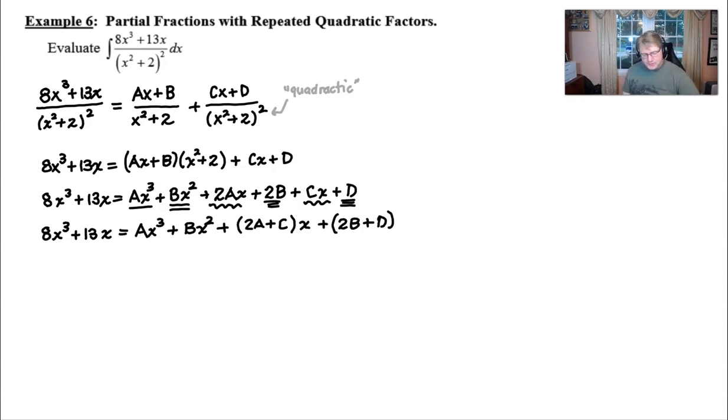Now you might wonder, where do we go from here? Well remember what I said about this, the match game. So you look at this 8x cubed term, and you say, hey, who does he pair up with on the right side? And it certainly would be the Ax cubed. And that forces you to see that the value of A in this problem must be 8 in order for this equation to be preserved.